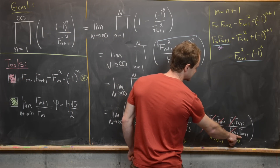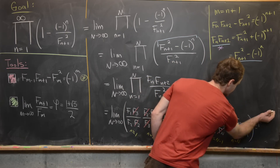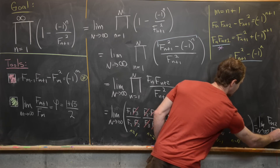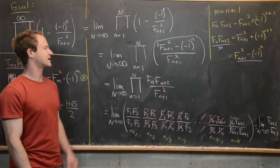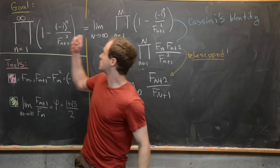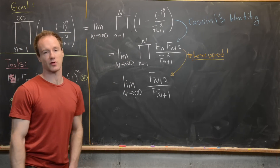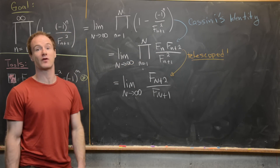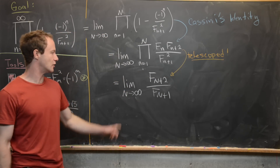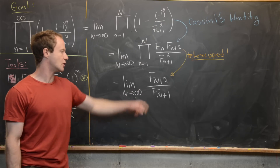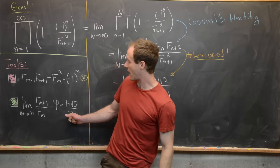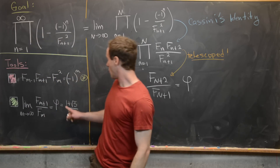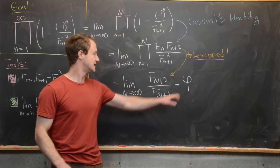After telescoping, we're left with the limit as N goes to infinity of F_{N+2} over F_{N+1}. Applying the result that the ratio of consecutive Fibonacci numbers converges to phi, this limit equals phi — the golden ratio, (1 plus the square root of 5) over 2. Therefore, our goal infinite product equals the golden ratio.